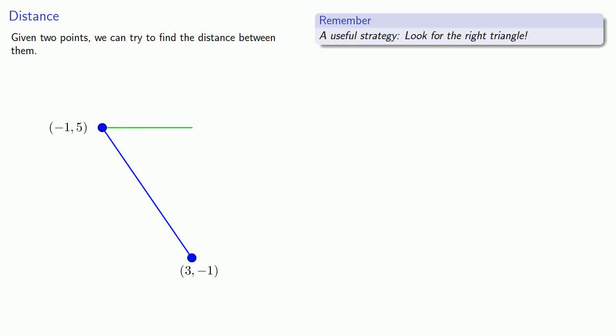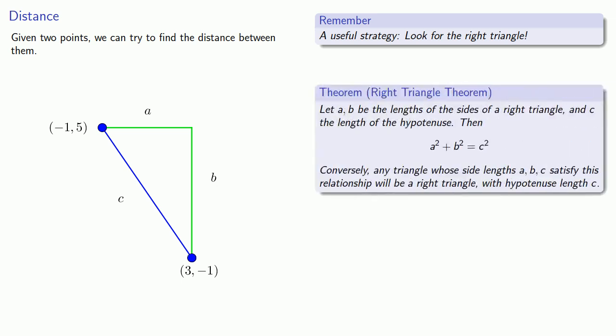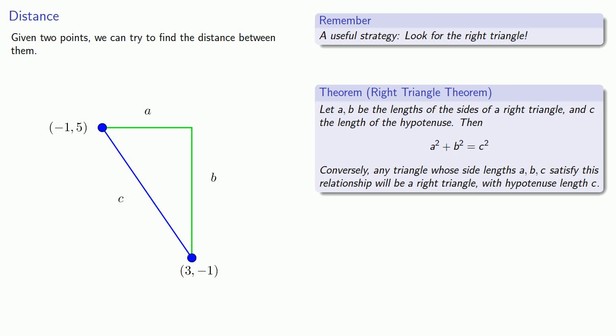There will be several different reasons why we want to look for the right triangle, but for now the important one is that given a right triangle, we have a relationship between the lengths of the sides. That relationship is known as the Pythagorean theorem or the right triangle theorem: let a and b be the lengths of the sides of a right triangle, and c the length of the hypotenuse. Then a squared plus b squared equals c squared.